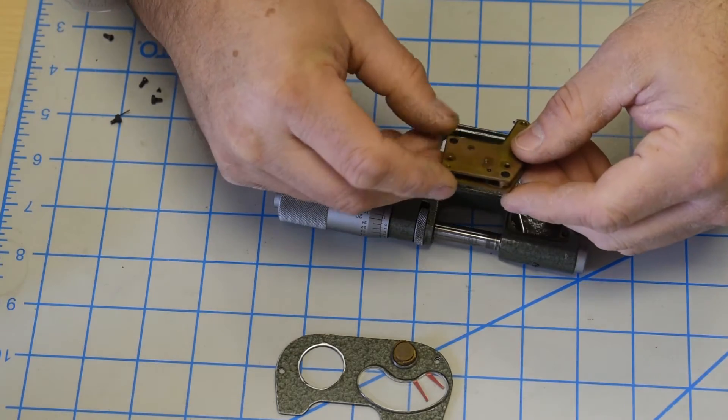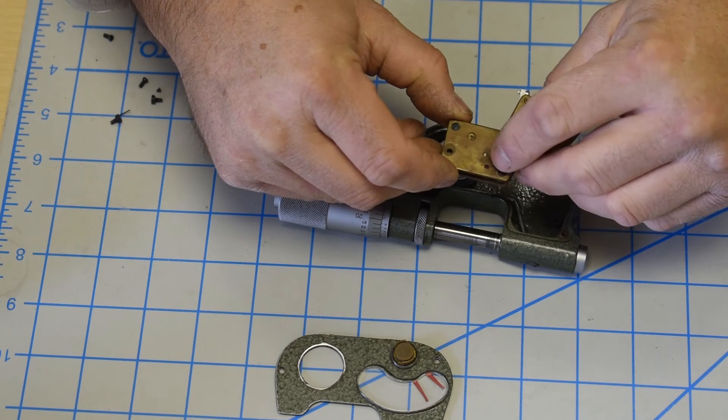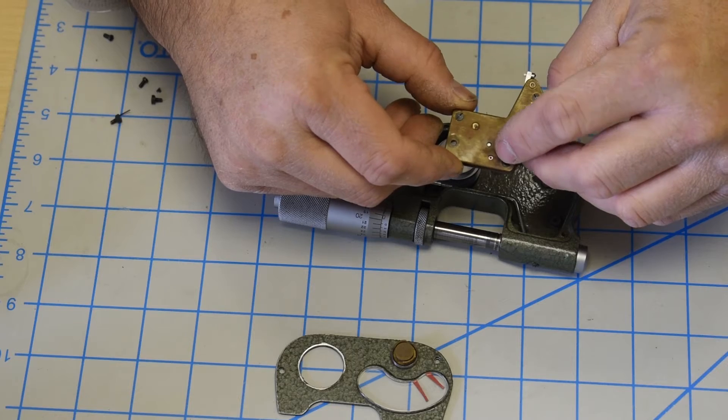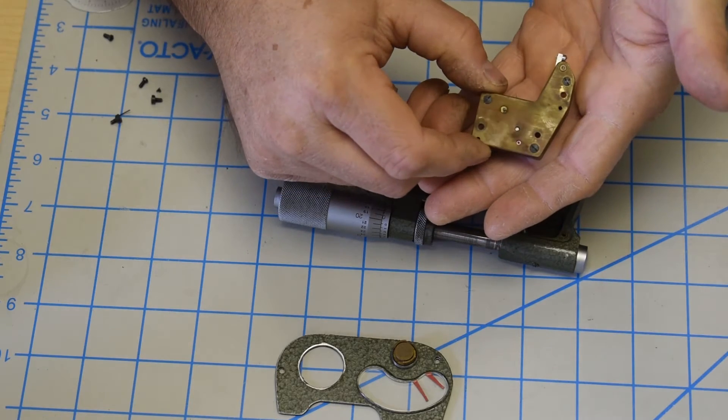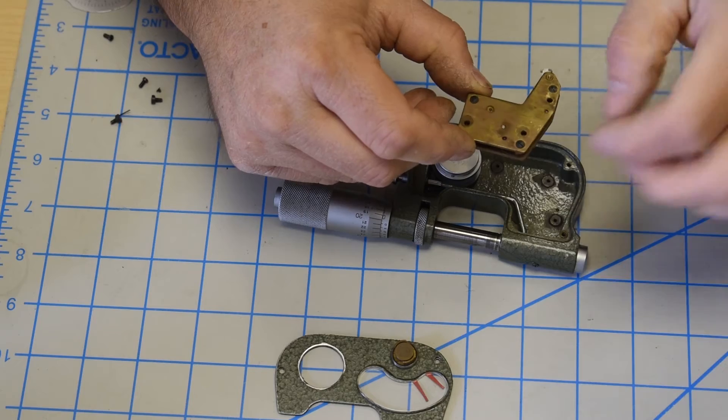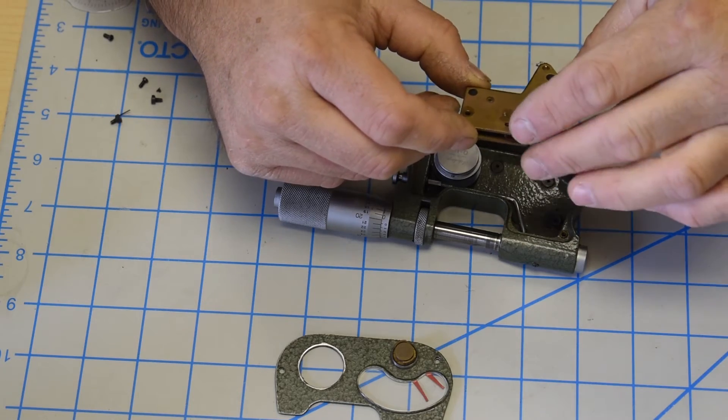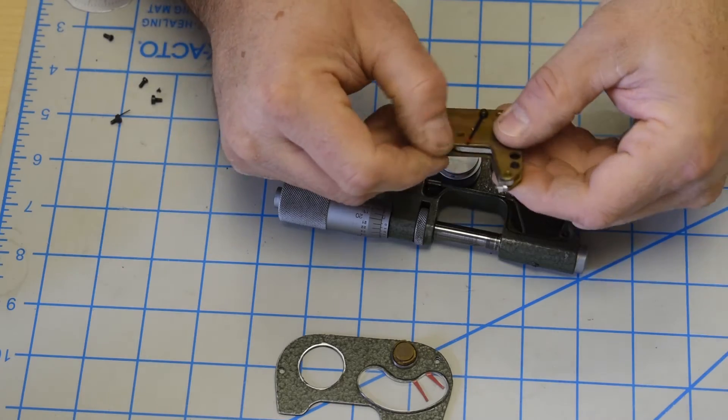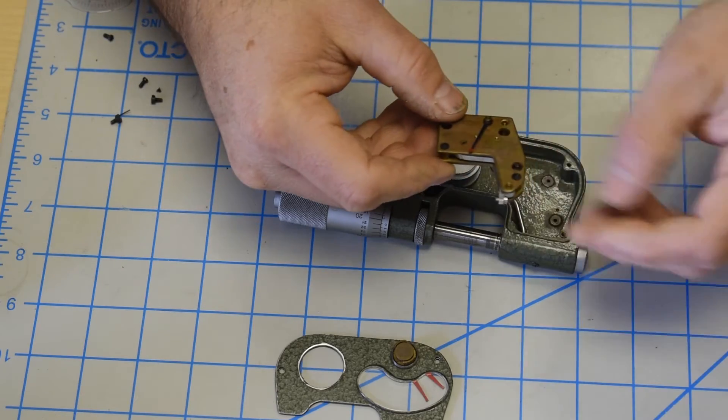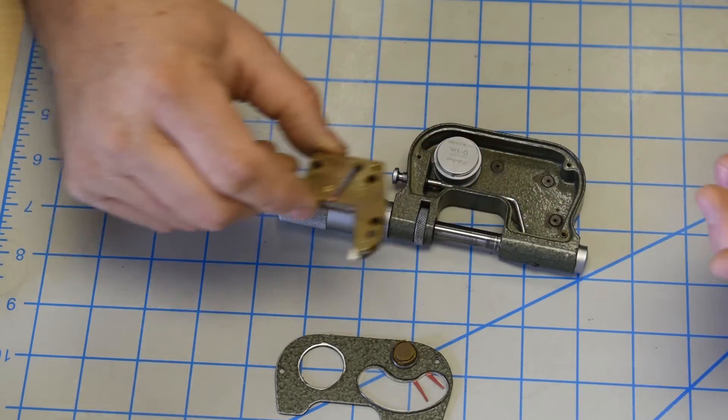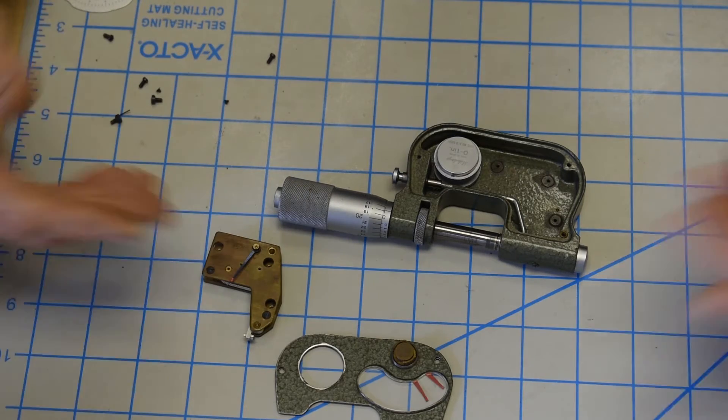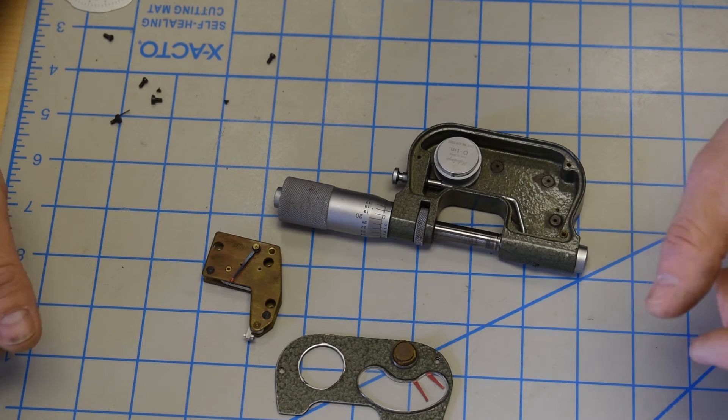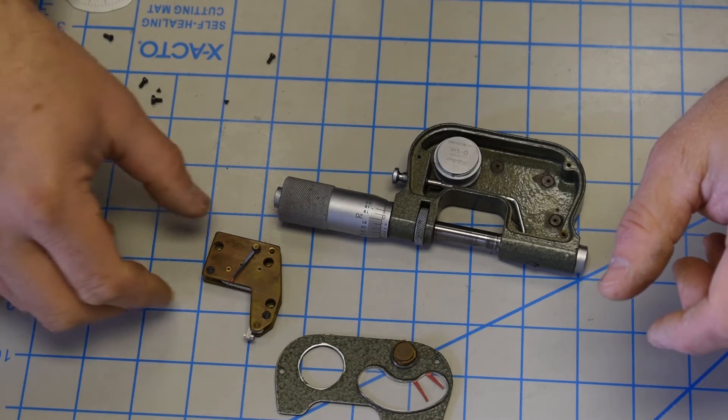This thing apparently has a jewel. You can kind of see that. It's a different color. It looks like a ruby jewel or something that it operates on. And I blew this out very delicately so as not to mess anything up. So now that everything is clean and operating or functioning as I think it should, we're going to go ahead and reassemble this.